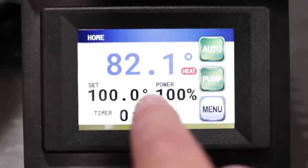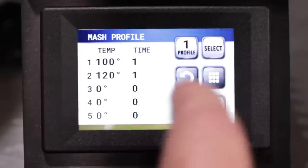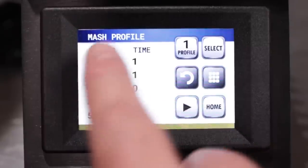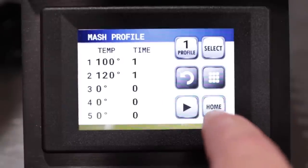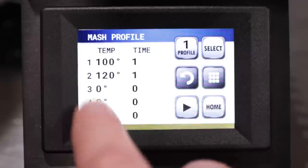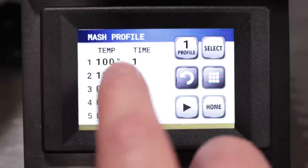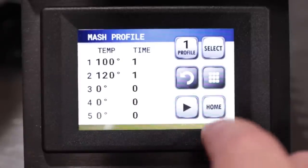The mash timer, you really shouldn't start that until you reach your strike temperature. So I'm going to pause it and reset it. But you need to wait until you get your water up to your strike temperature before you actually go into the menu and hit your mash profile, your mash timer start. So that's just one thing you need to know. It doesn't wait until it gets to the temperature. It actually only starts when you tell it to start and you should be at your strike temperature and mashed in before you actually start the timer.